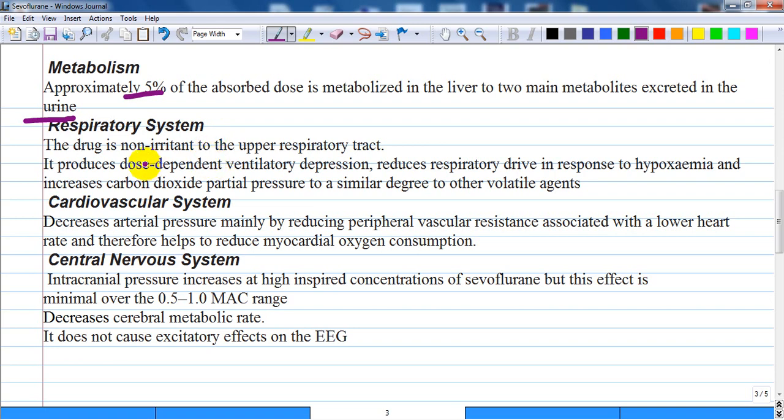This drug is non-irritant to the upper respiratory tract. It produces dose-dependent ventilatory depression, reduces respiratory drive in response to hypoxia, and increases carbon dioxide partial pressure to a similar degree to other volatile agents. It produces some relaxation of bronchial smooth muscles as well.